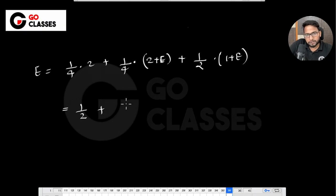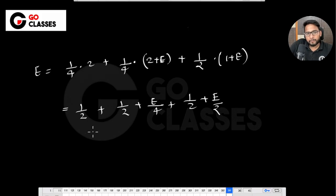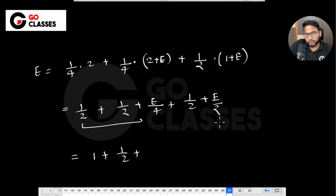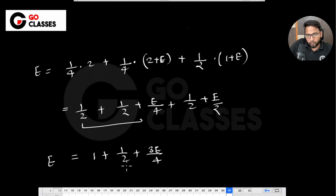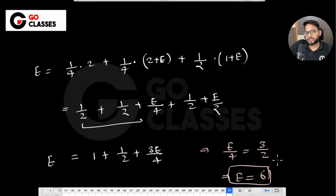Writing the equation: E = (1/4)·2 + (1/4)·(2+E) + (1/2)·(1+E). Expanding: E = 1/2 + 1/2 + E/4 + 1/2 + E/2. Simplifying: E = 3/2 + 3E/4, so E/4 = 3/2, which gives E = 6. You need 6 tries on average to get 2 heads in a row.